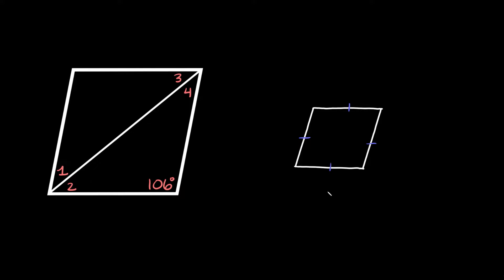Now the other thing you have to keep in mind is that for a rhombus or a parallelogram, consecutive angles are supplementary. Consecutive angles are just angles that are next to each other. So for example this angle and this angle are next to each other, and angles that are next to each other add up to 180 degrees.